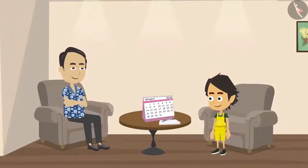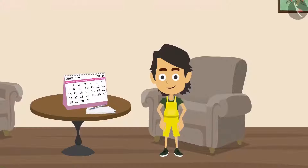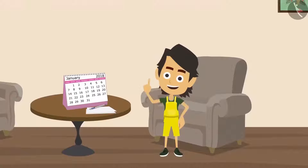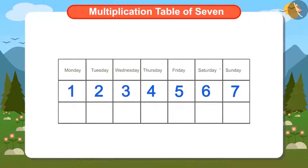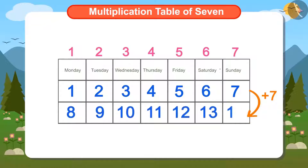But Papa wants Ayushman to tell next Sunday's date without looking at the calendar. Can you help Ayushman get the answer? Ayushman knows that there are 7 days in a week. So, if 7 is added to today's date, the 7th, then next Sunday's date will be easily known. If we add 7 to date 7th, the answer will be 14.